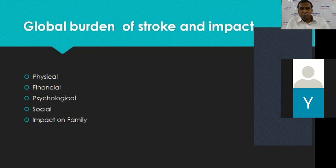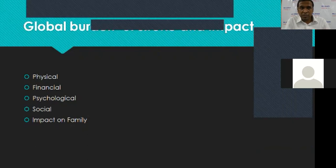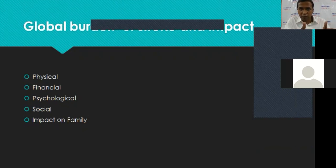We need to realize the global burden of stroke. Anyone who has had a patient with a stroke in the family would know what that burden means. When somebody in the family has a stroke, the entire family is affected — jobs, daily schedules, everything. People have to wake up early to take care of the patient, feed them, and assist them. There is a significant physical burden: somebody who is paralyzed or has weakness of one side cannot perform their activities of daily living.